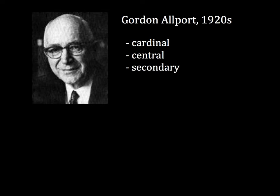Allport organized his list of 4,500 traits into three tiers: cardinal traits, those which dominate and shape a person's behavior; central traits, those that are found in some varied degree in all people; and secondary traits, those that are seen only in certain situations.